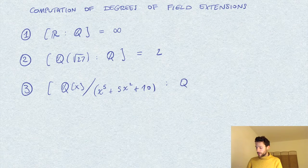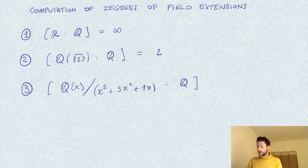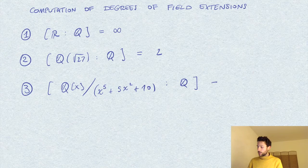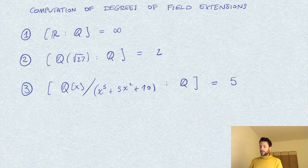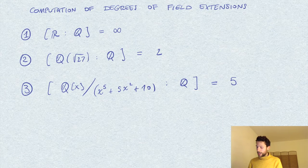As an extension of Q, so as a vector space over Q, has dimension 5, or degree 5 as an extension.